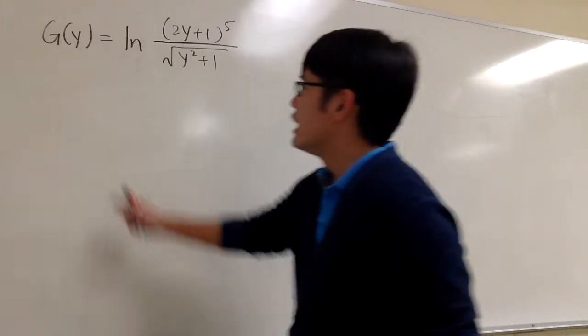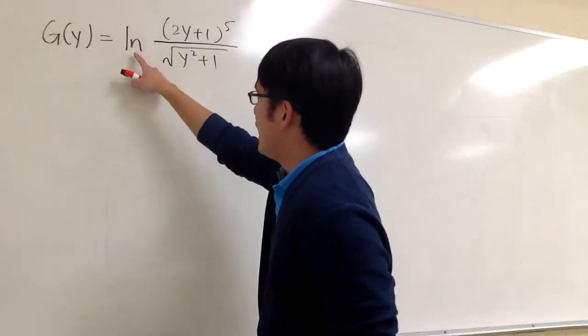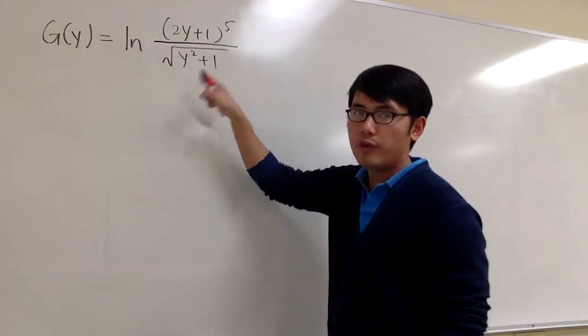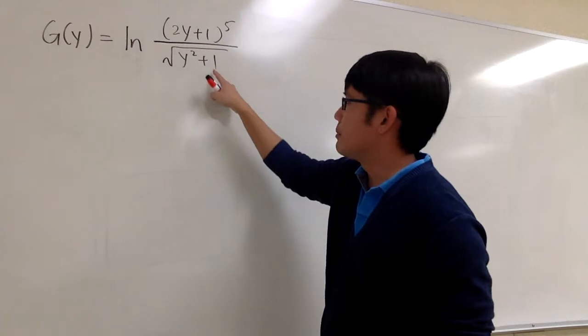Let's take the derivative of this function. g of y is equal to ln of 2y plus 1 to the fifth power over square root of y squared plus 1.